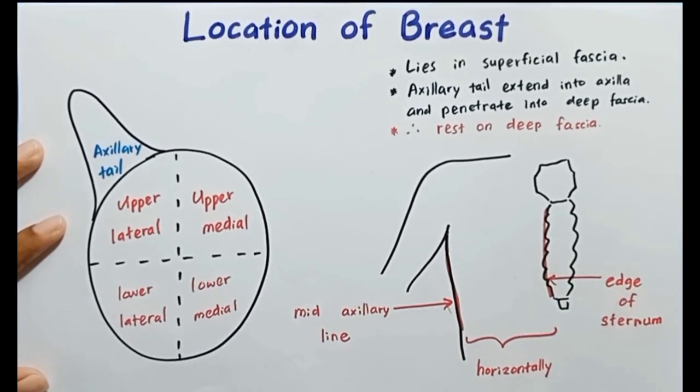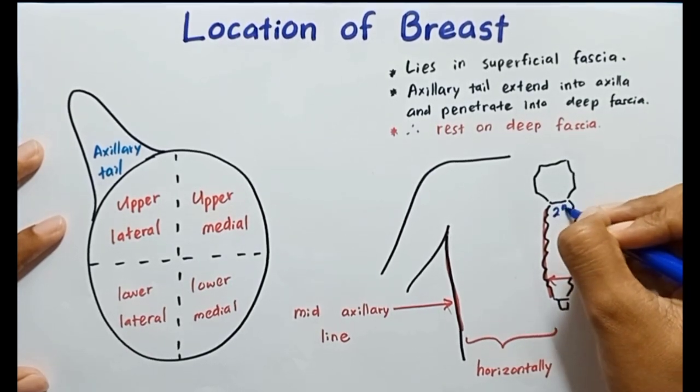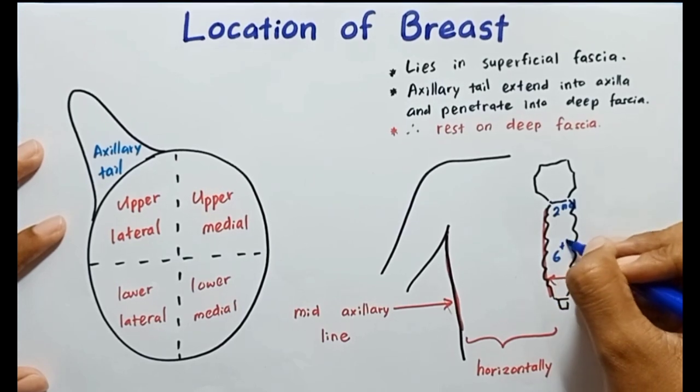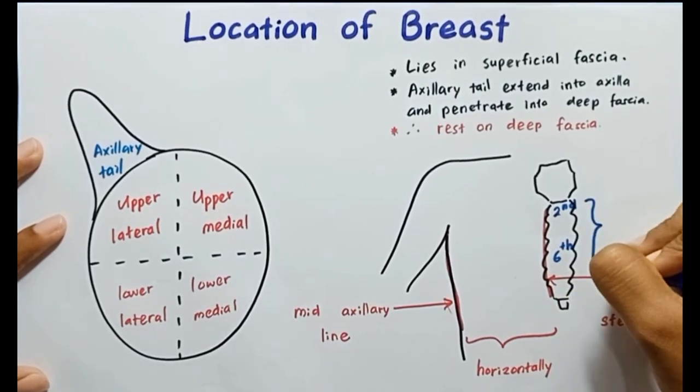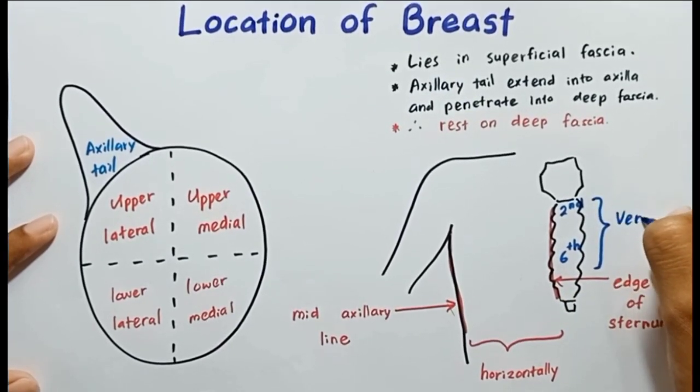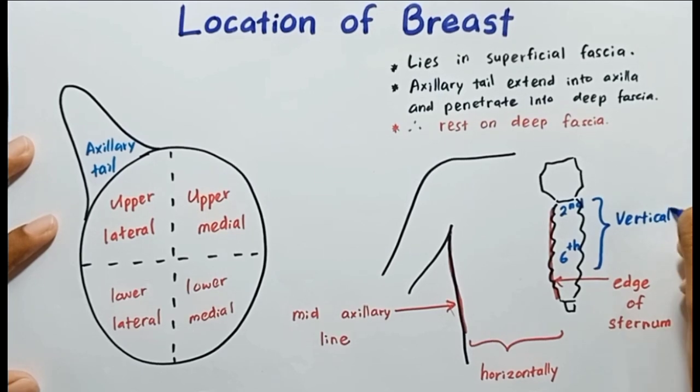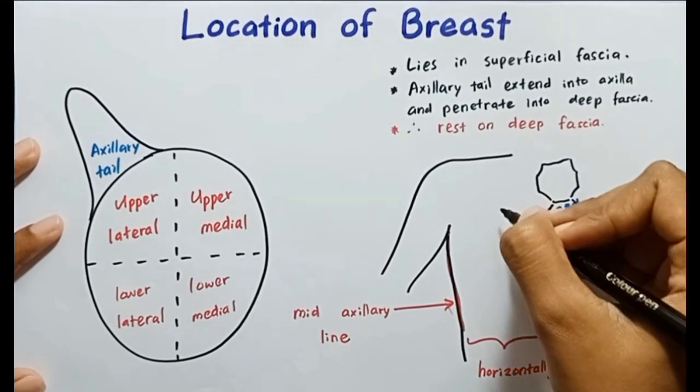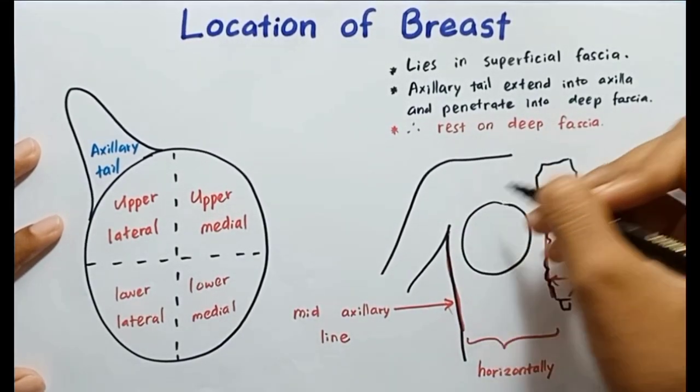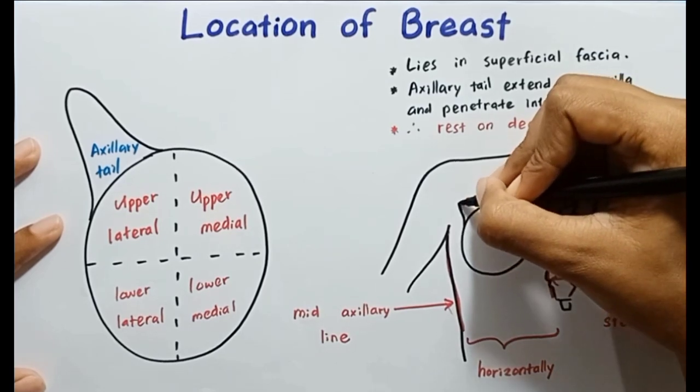And when we talk about the vertical location, it's between the second and sixth rib. So second and sixth rib. This is the vertical location. So the breast lies in a position like this.